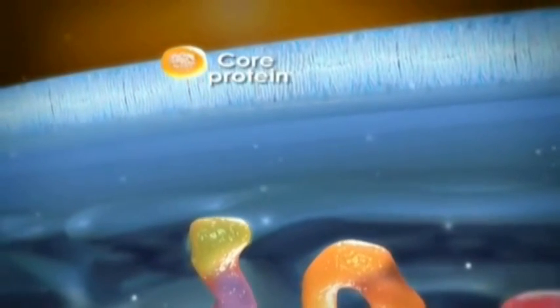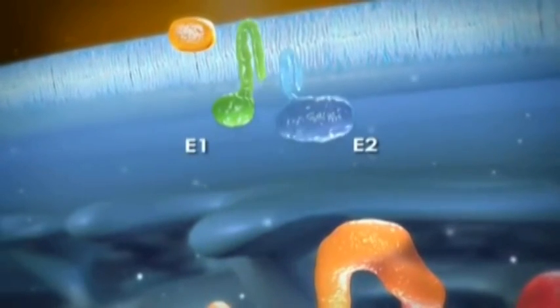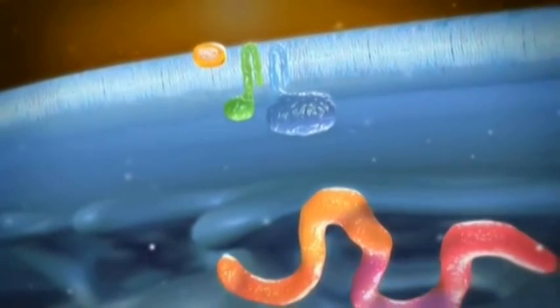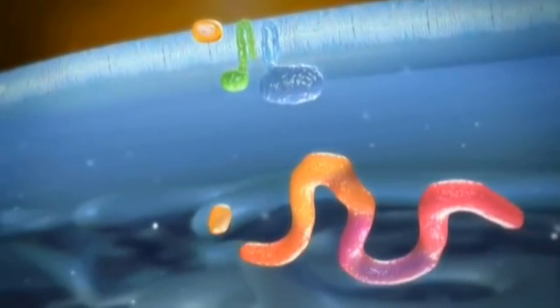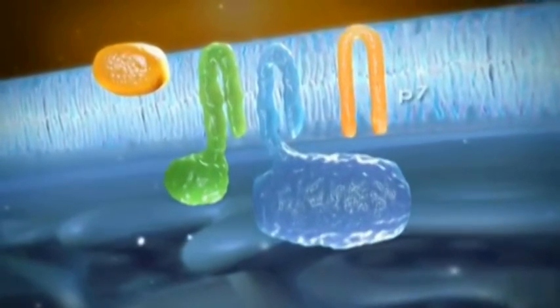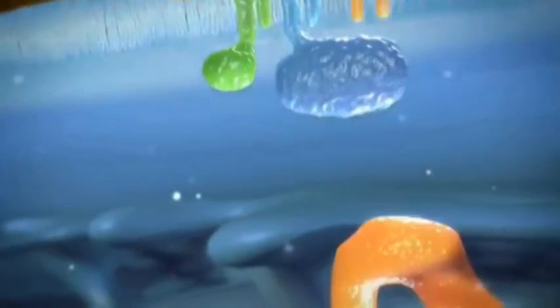The three structural proteins include the core protein, plus envelope proteins E1 and E2. E2 proteins are attached to liver cell receptors. All three structural proteins along with the first non-structural protein, the ion channel P7, are freed from the polyprotein chain by liver cell enzymes.